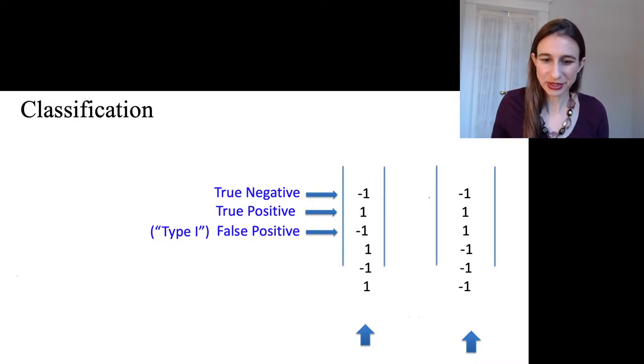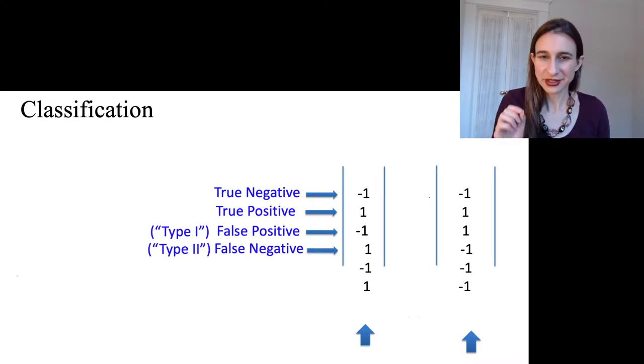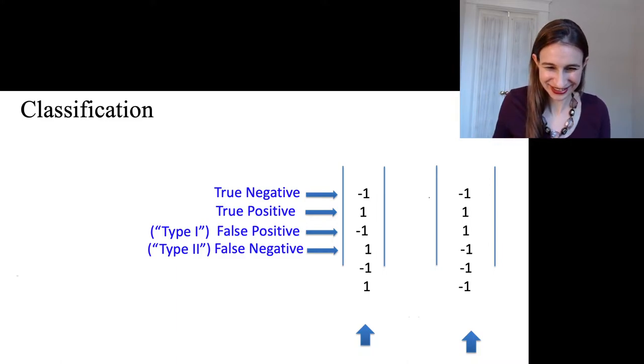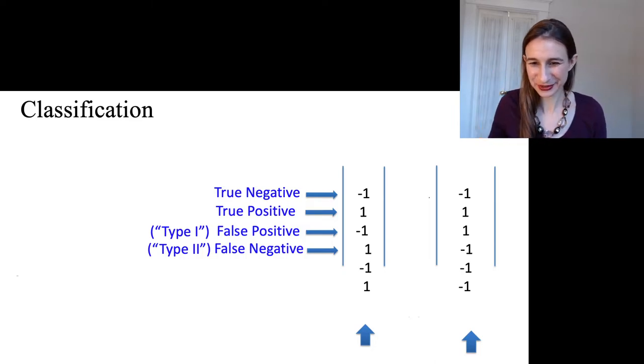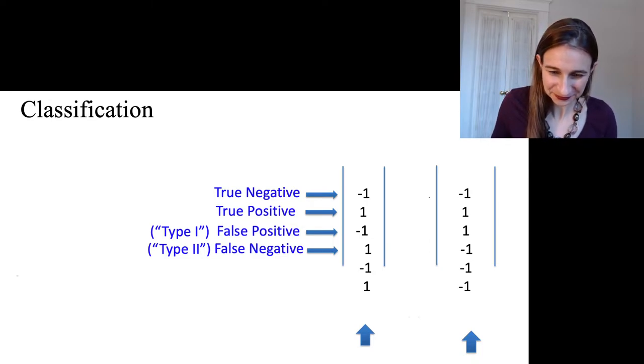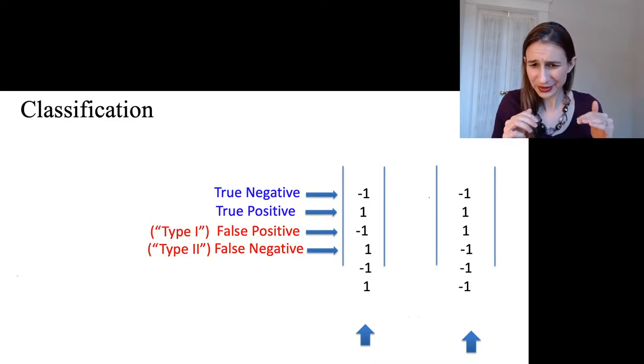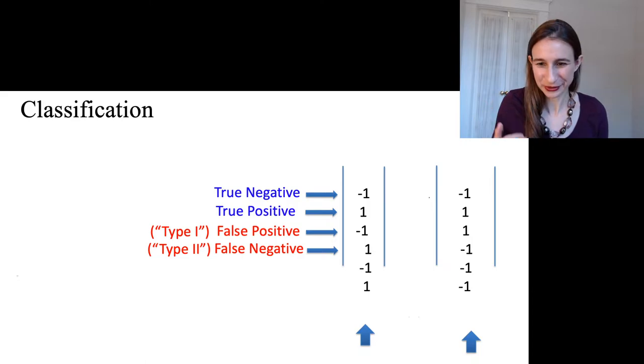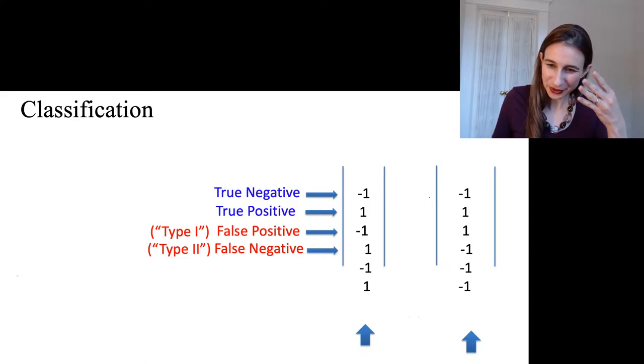A false positive is when you predict that something is positive, but it actually isn't. And that's also called a type 1 error. And then a false negative is when you predict that something is negative, but it actually isn't. So those are the four different flavors of predicted versus true. And the ones that are in red are errors. That's when you make an error, and then obviously you don't make an error when you have a true negative or a true positive.